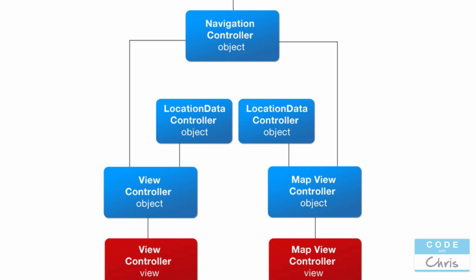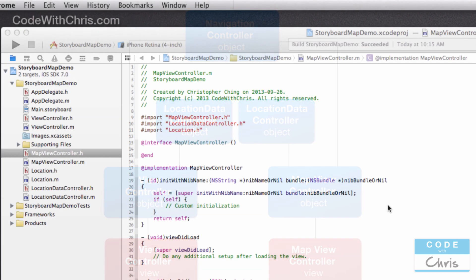In other circumstances, if we wanted changes made to the model from one view controller to be reflected when the user moves to the second view, we would actually share one location data controller object — one model — between the two view controllers. That way, if the first view controller modifies some data in the model, when the user moves to the second view controller it will access the same model and the changed state, so data is persisted across views.